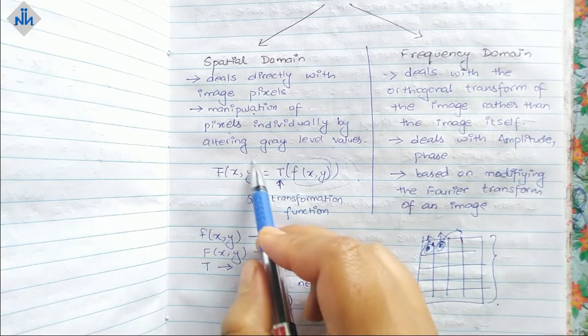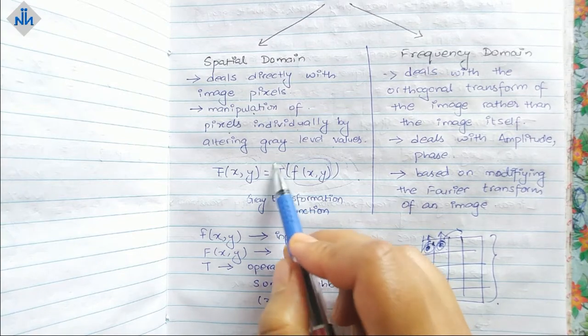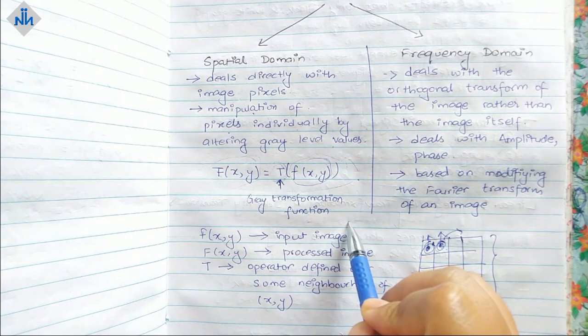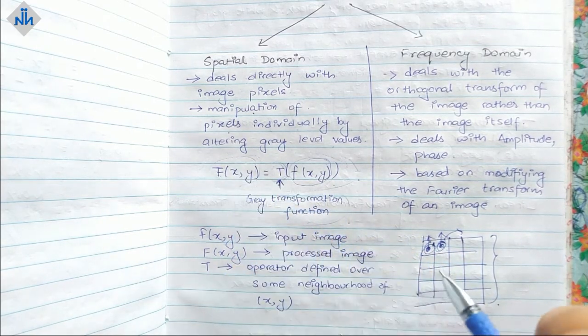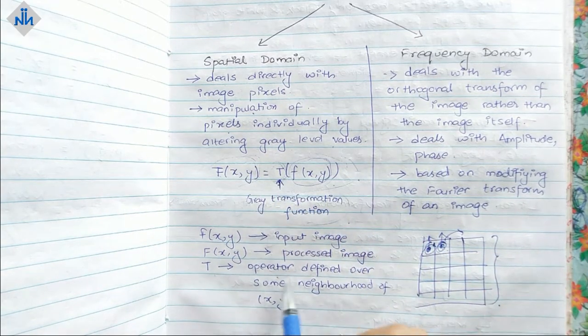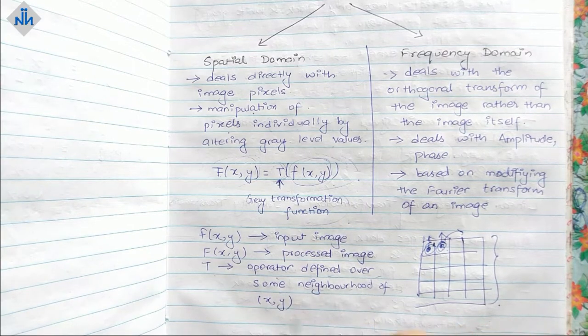Here this f(x,y) is our input image, this is our processed image, and T is the gray transformation function. This is the function that we will be applying on the input image to form this image, and T is the operator defined over some neighborhood of (x,y).